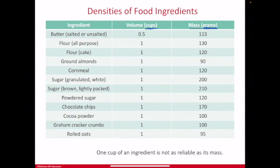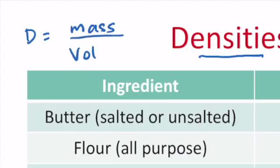The reason why recipes will have a mass in grams is because of the fact that food ingredients have different densities. And density is mass over volume, so how much mass there is in a certain volume.